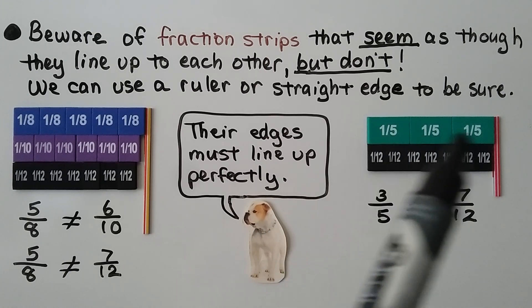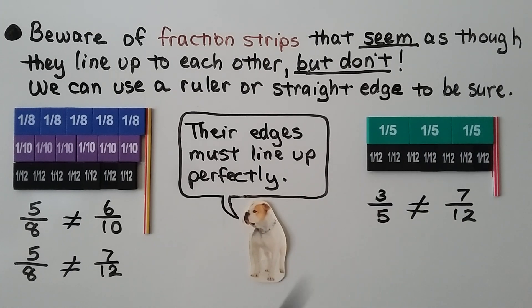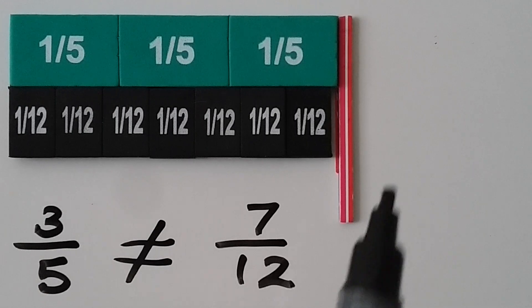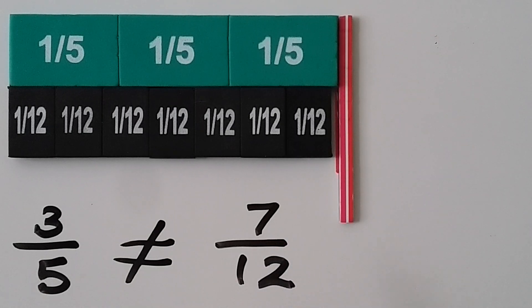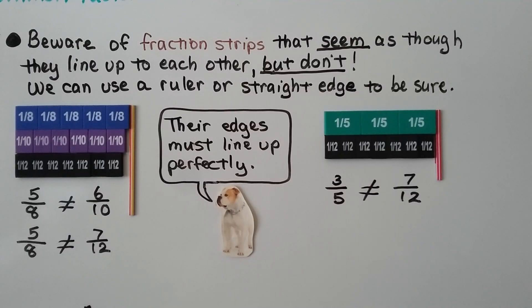This is the tricky one. We have three-fifths, it's not equal to seven-twelfths. We need to take a closer look. When we line them up, there's a very tiny little gap here. So, three-fifths is not equal to seven-twelfths. Be very careful and make sure they line up perfectly.